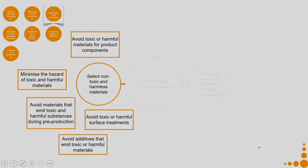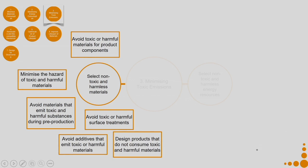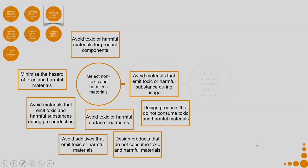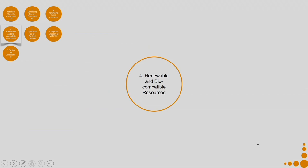Avoid toxic or harmful surface treatments. Design products that do not consume toxic and harmful materials. Avoid materials that emit toxic or harmful substances during usage, and avoid materials that emit toxic or harmful substances during disposal. Consider the entire life cycle of the product from pre-production up to disposal, and minimize toxic emissions at all different stages and components right down to the surface finishing level.